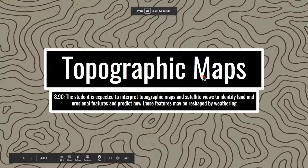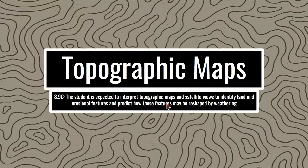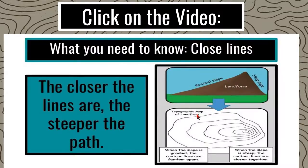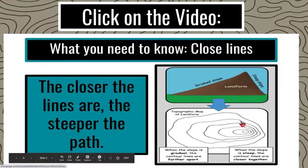We are going to do topographic maps — 8.9C. The student is expected to interpret topo maps and satellite views to identify land and erosional features, and predict how these features may be shaped by weathering. You'll have access to this video; I want to go through this information so you know what you're looking at when you see all these circles and lines on a topographic map. Let's dive right in.